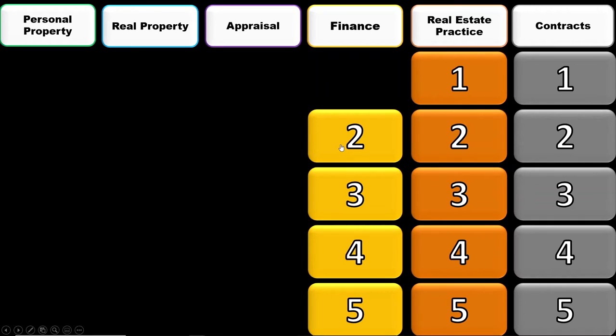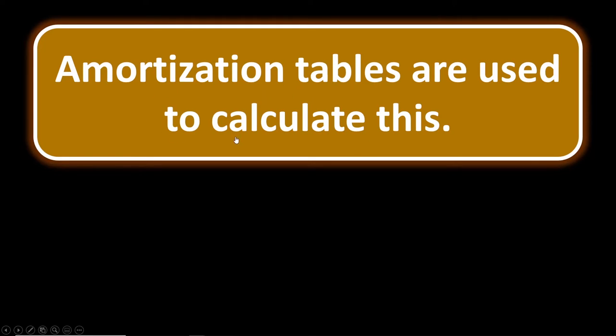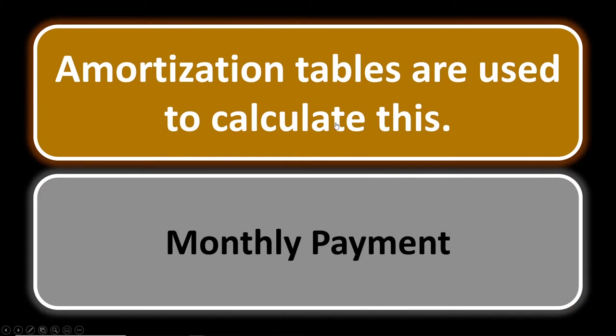Finance number two: amortization tables are used to calculate what? When we have an amortized loan, we use these tables because they help us figure out what the monthly payment is, and also show how much of the monthly payment goes toward interest versus principal each month.